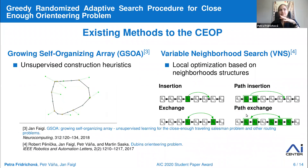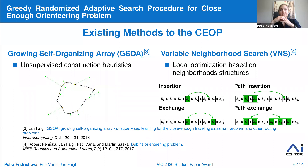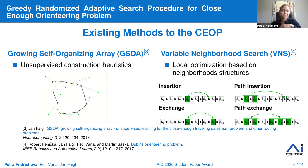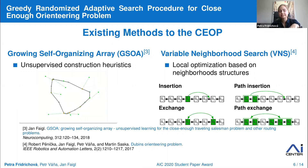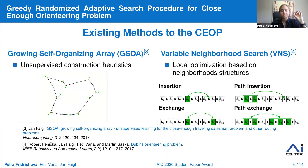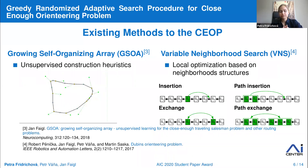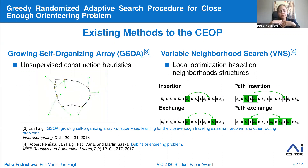CEOP is a really challenging problem because it combines a discrete and continuous part. In the literature, we can find only two approaches to tackle this problem, which we also use as baselines for our approach. The first is the growing self-organizing array, GSOA, an unsupervised learning method based on the principle of self-organizing maps. It was originally developed for the traveling salesman problem and is a constructive heuristic that converges in several iterations, providing a solution quickly. However, once the solution is found, it cannot be further improved.